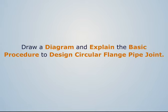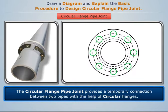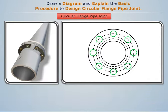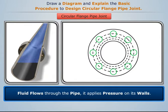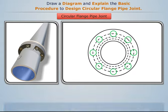Draw a diagram and explain the basic procedure to design a circular flange pipe joint. The circular flange pipe joint provides a temporary connection between two pipes with the help of circular flanges. The flanges are welded with pipes and then bolted to form a temporary joint. When a fluid flows through the pipe, it applies pressure on its walls.